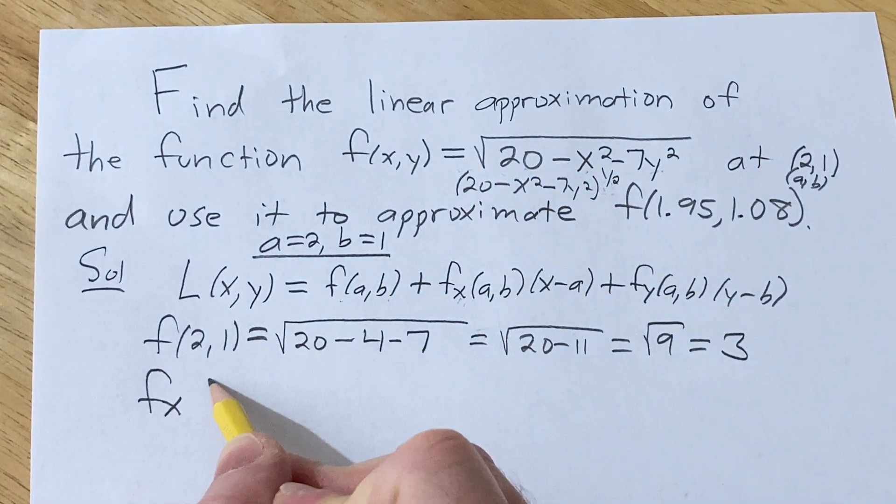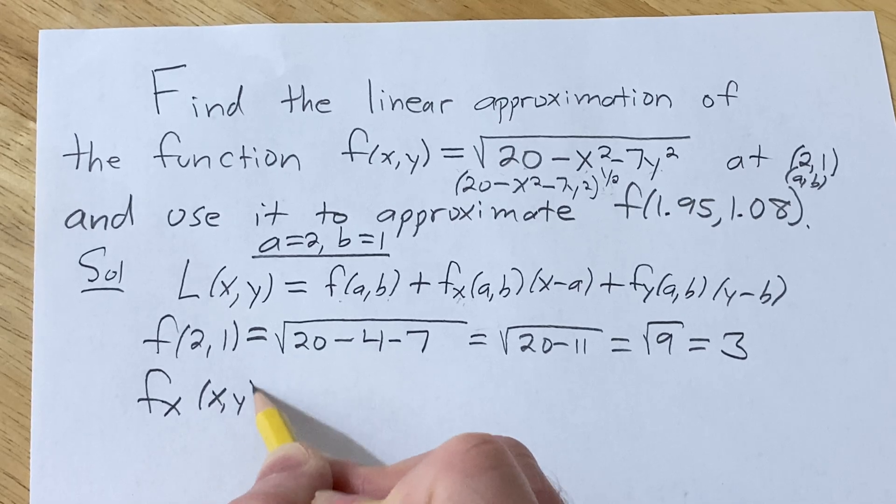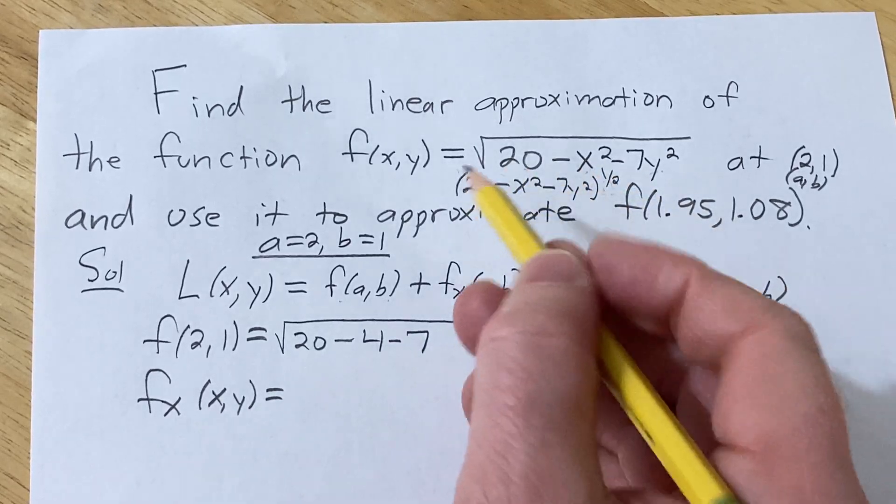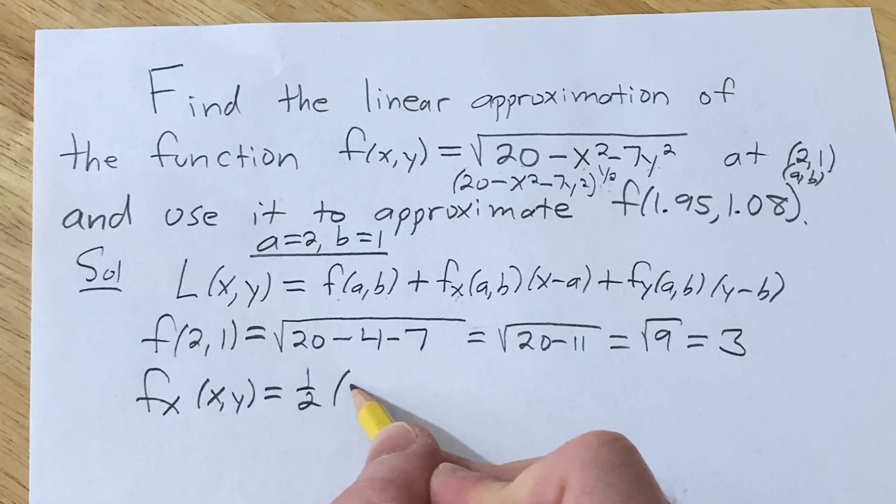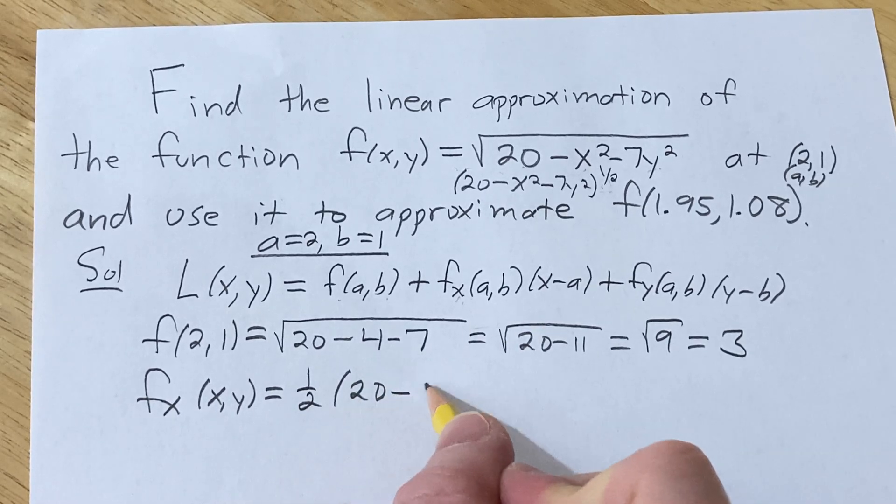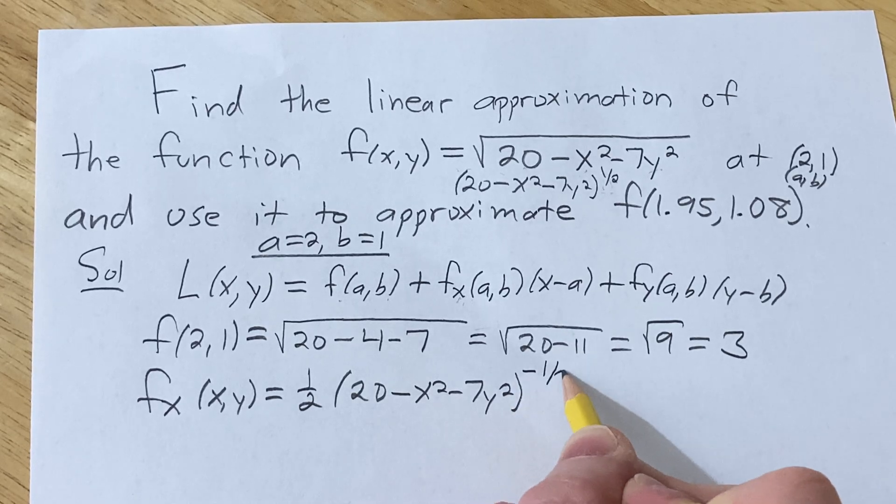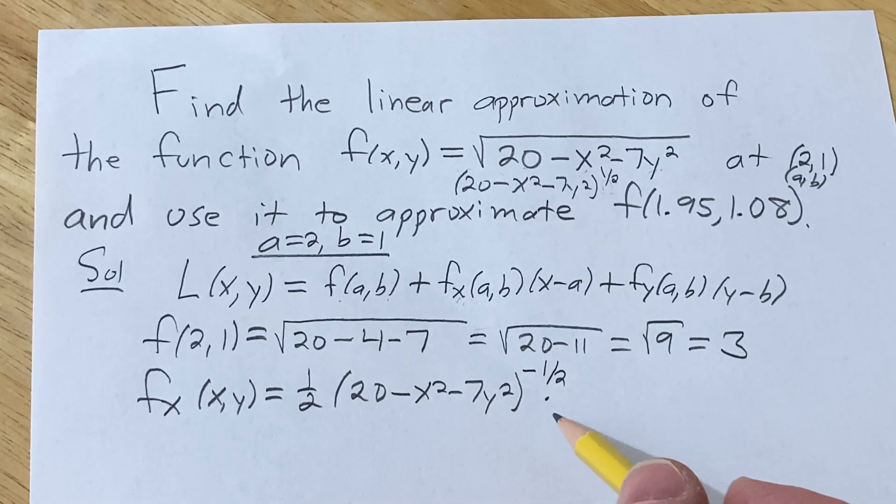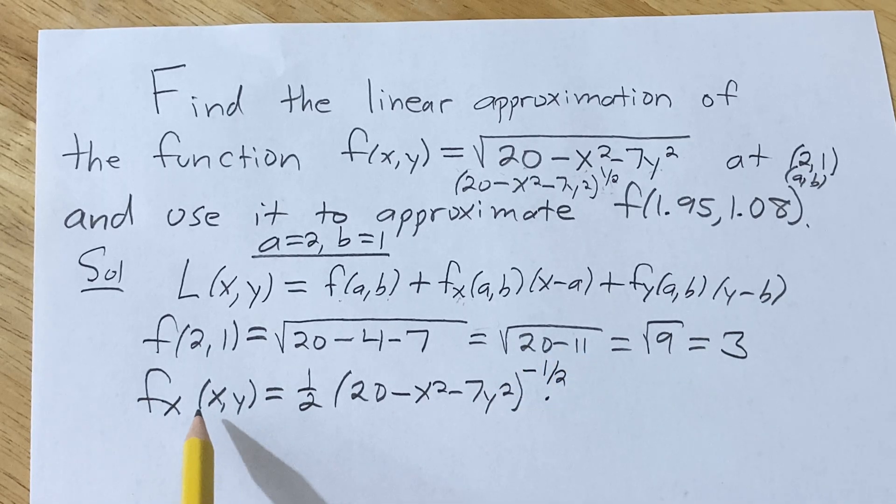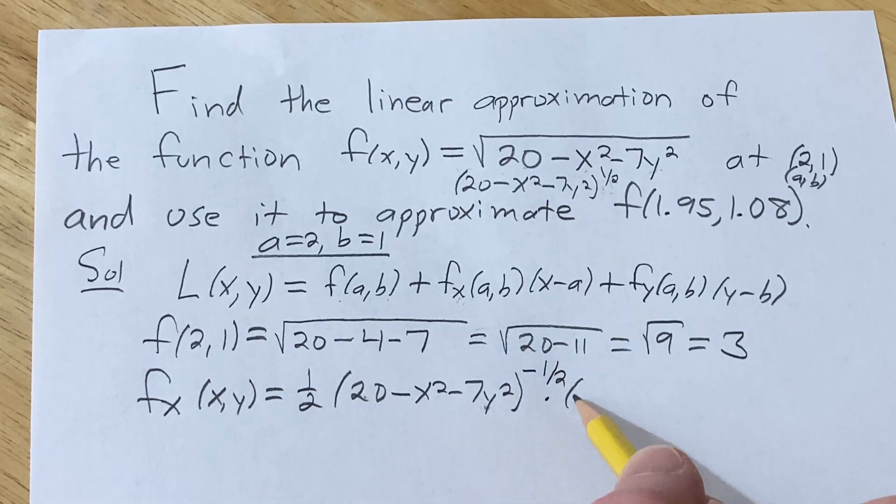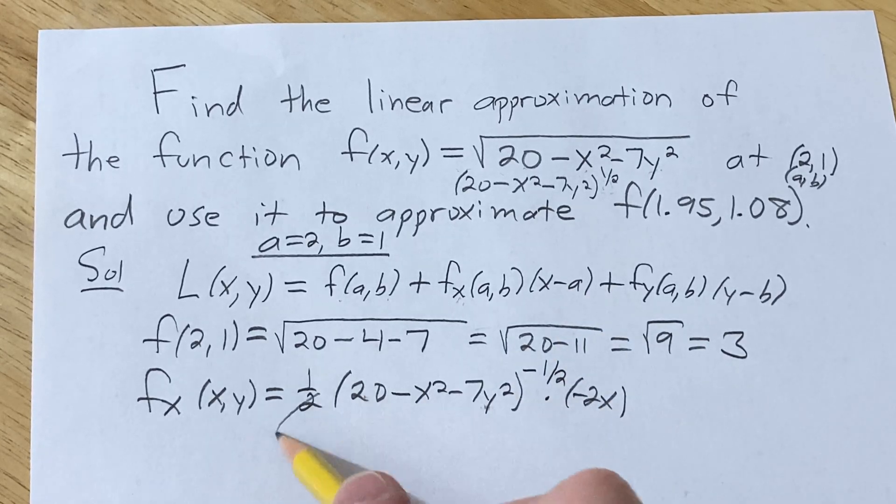So we're going to bring down the 1/2 when we differentiate and use the chain rule. So the partial with respect to x, you bring down the 1/2, leave the inside untouched. So (20 - x² - 7y²), subtract 1 from the exponent times the derivative of the inside, chain rule. We take the derivative of the inside and we leave the y's as constants, so when we differentiate this we're going to get 0, 0. So we're just going to get -2x here.